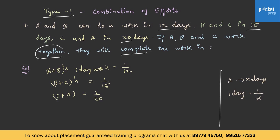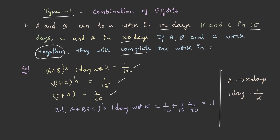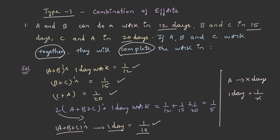Since A, B and C work together, on adding these 3 equations: 2 into A plus B plus C's one day work equals 1 by 12 plus 1 by 15 plus 1 by 20. On solving this, we get 1 by 10, so A plus B plus C's one day work is 1 by 10. He is asking for the number of days to complete the work, so by reciprocating, A, B and C together finish the work in 10 days.